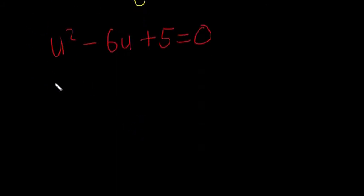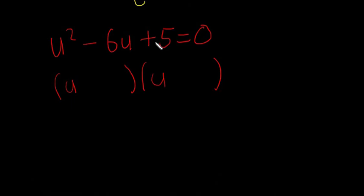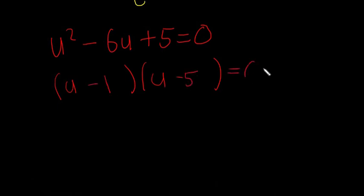Now we can factorise U squared minus 6U plus 5 equals 0. We use the factors minus 1 and minus 5: multiplying them gives plus 5, and adding them gives minus 6. So we get (U minus 1)(U minus 5) equals 0, which means U equals 1 or U equals 5.